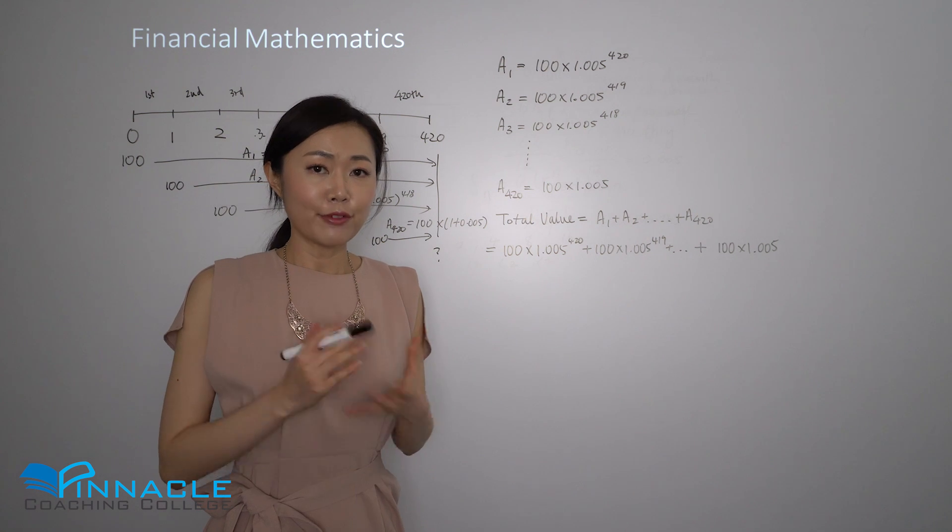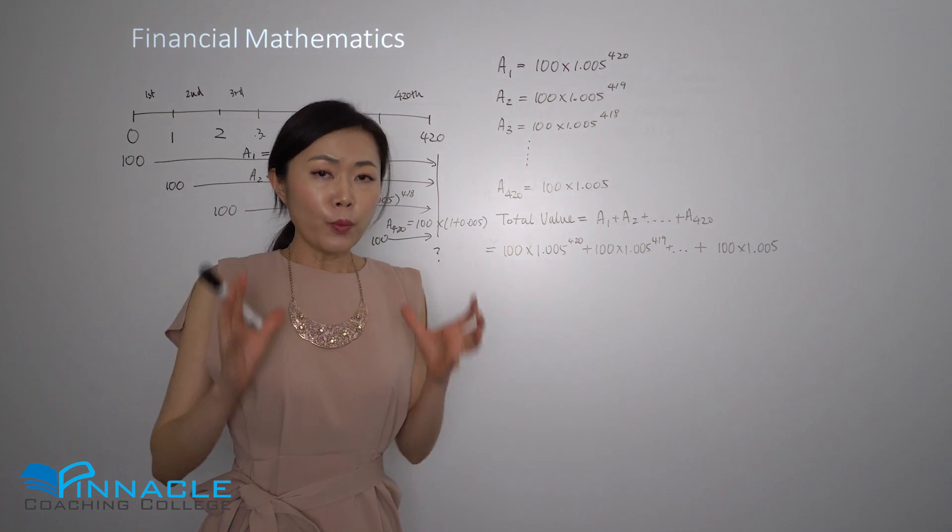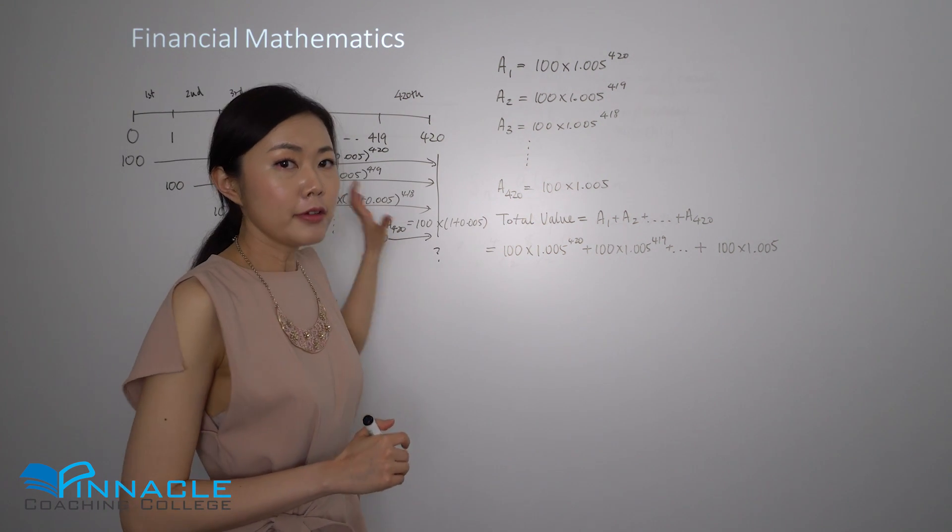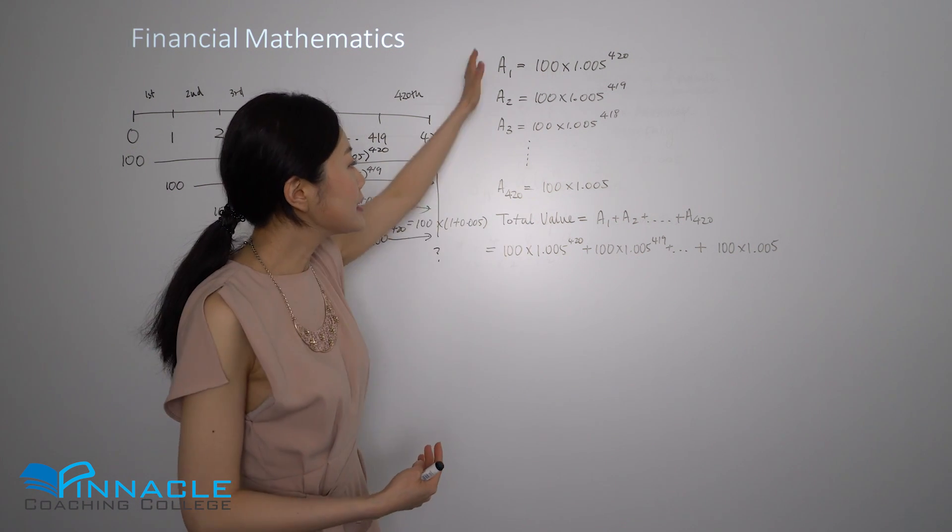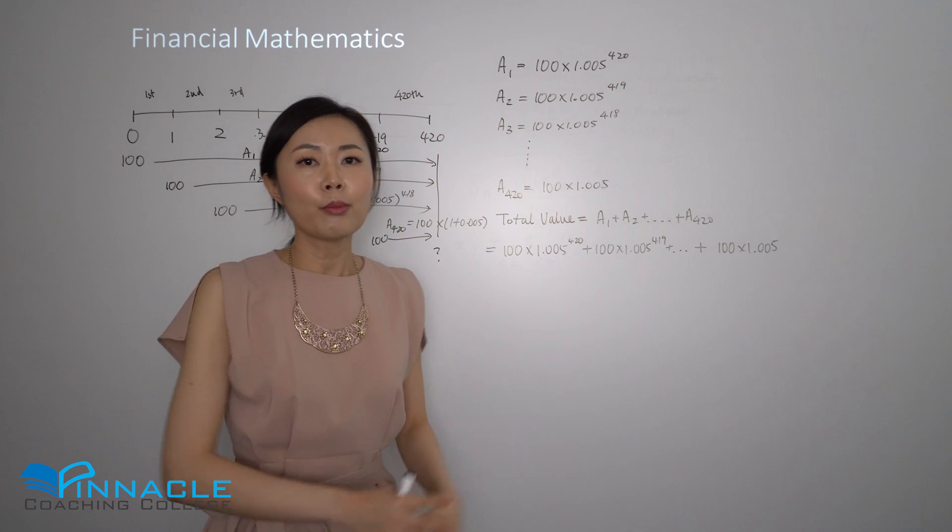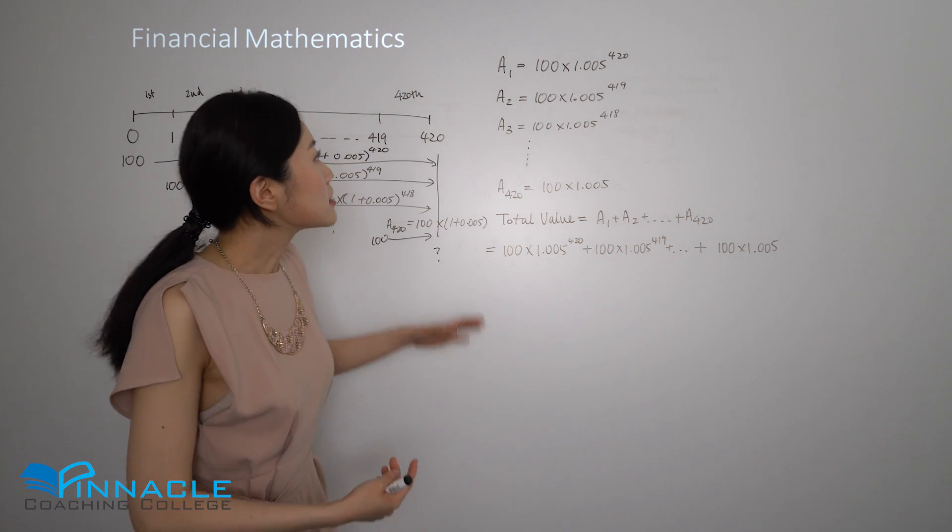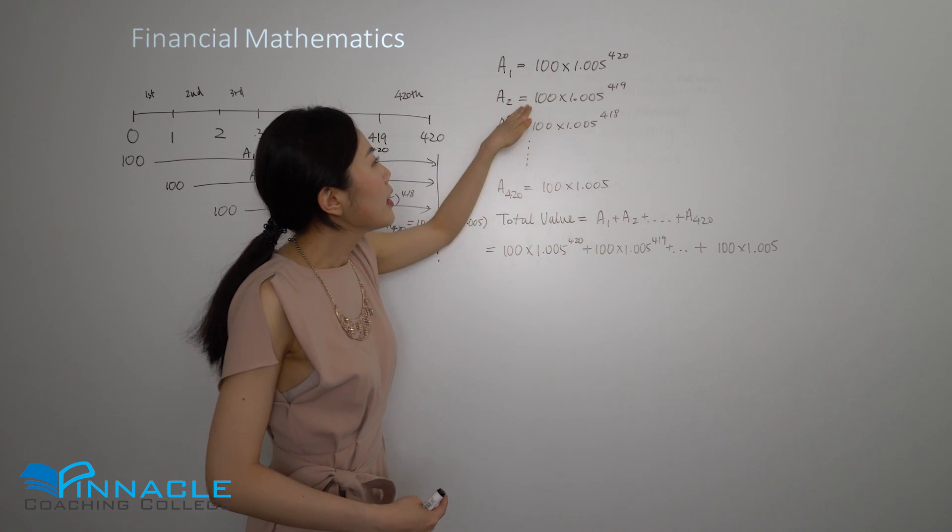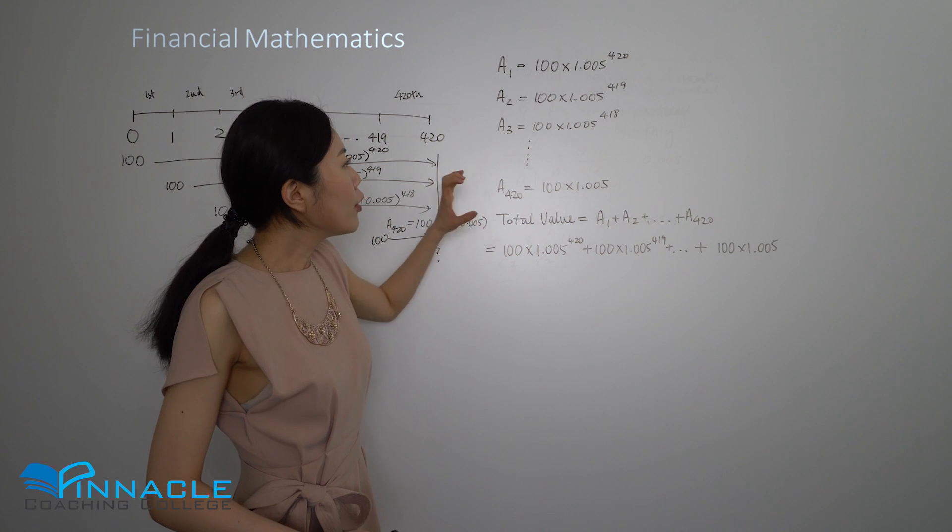Now that we've seen how each of the streams of payments are compounded, let's take a look at building the formula for calculating that final value. The typical working for a financial maths question should look something like this. Diagram not necessary, only if it helps you analyze the problem. This is the bare minimum you should be writing as part of your response. I do not like seeing responses where they just jump to the final formula because it doesn't show understanding. You need to show the building process. So A1 to the power of 420, then 419, 418, down to the last payment 1.005. The total value is adding all these streams, so A1 added to A420. Then take out $100 so you can see the sequence more clearly.